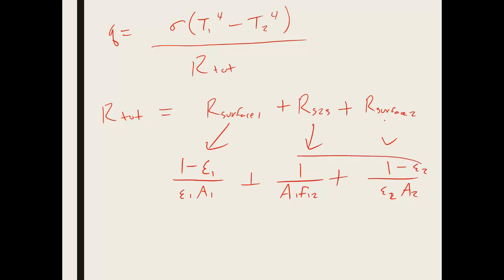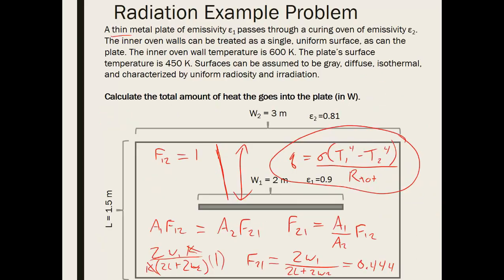So we would add these up and those would ultimately go in the denominator here. So what we've just partially derived is a heat transfer equation that accounts for these various assumptions that we've made. So gray, diffuse, isothermal, uniform radiosity, and irradiation. This is also a steady state problem.